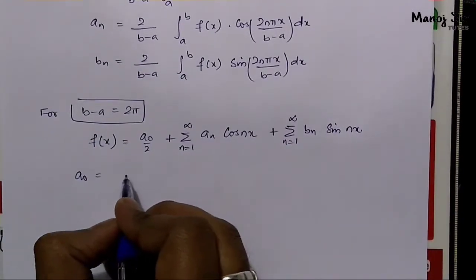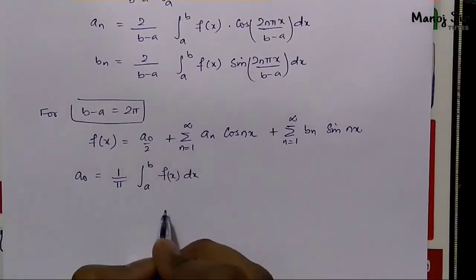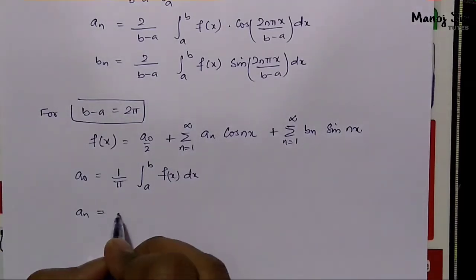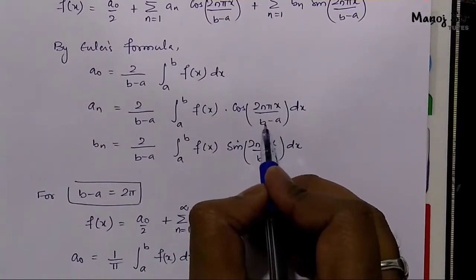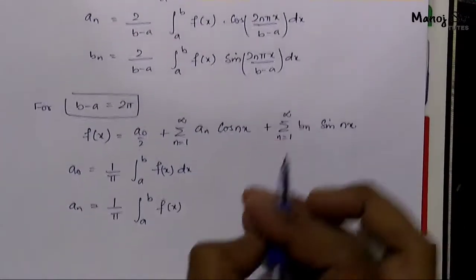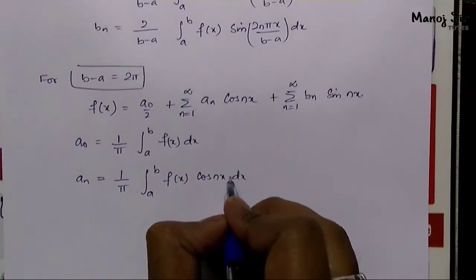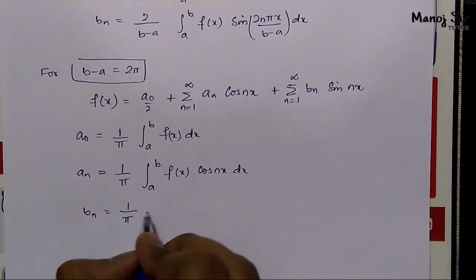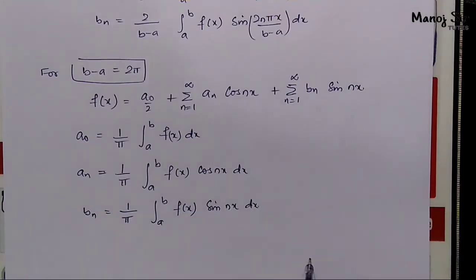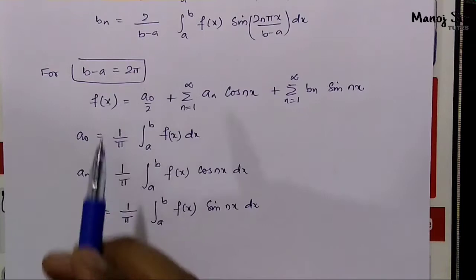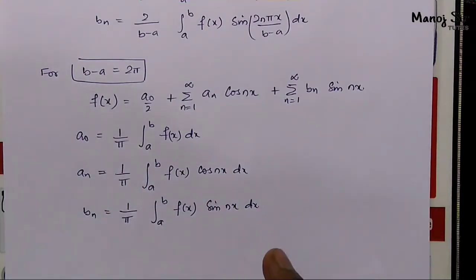When b minus a equals 2π, the Euler's formulas simplify to: a naught equals 1/π times integration from a to b of f(x) dx; aₙ equals 1/π times integration from a to b of f(x) cos(nx) dx; and bₙ equals 1/π times integration from a to b of f(x) sin(nx) dx. Whenever b minus a equals 2π, we use these simplified formulas straightforwardly.